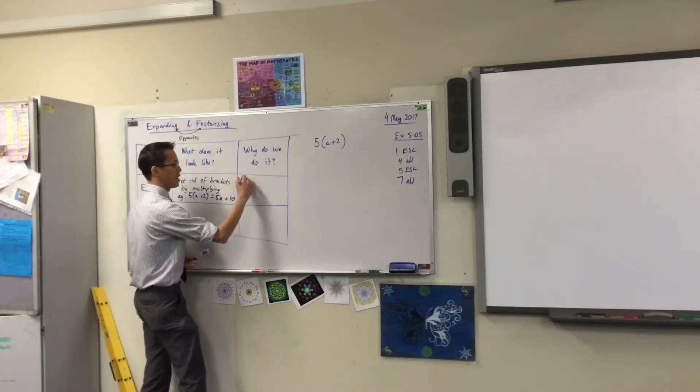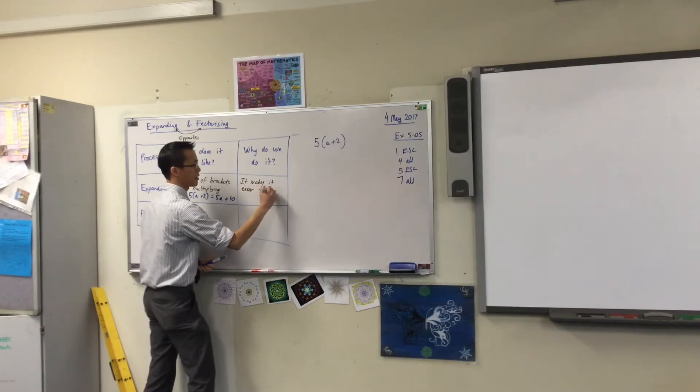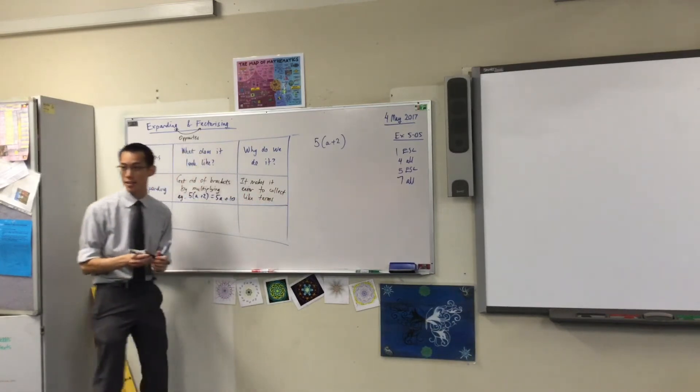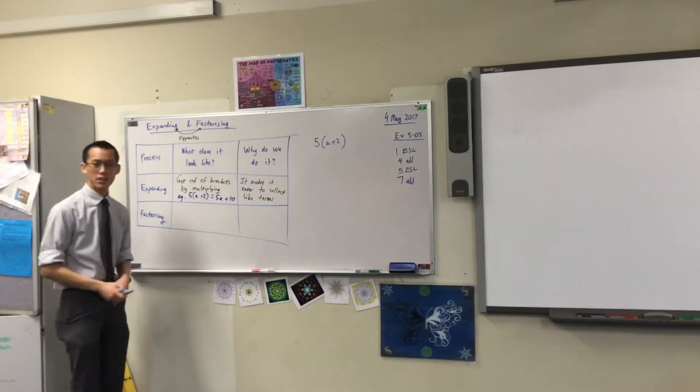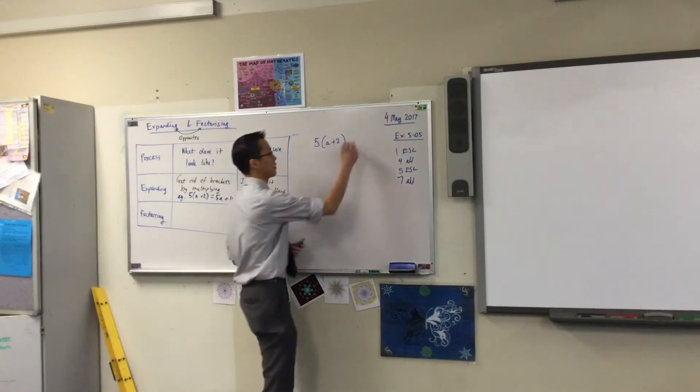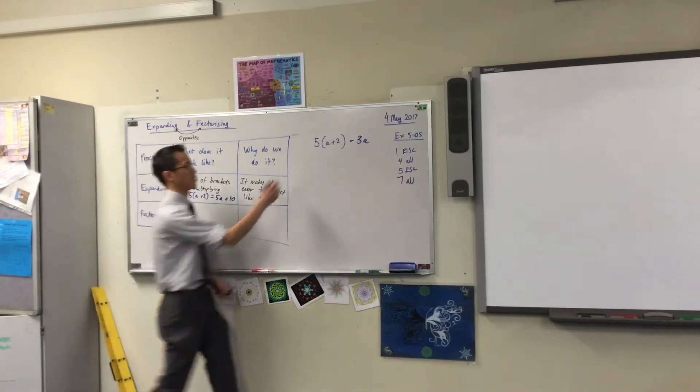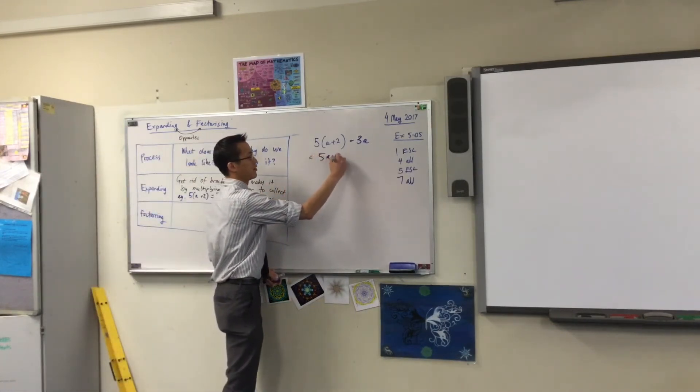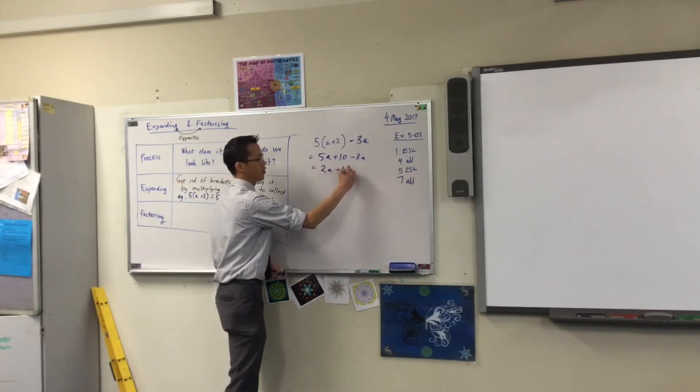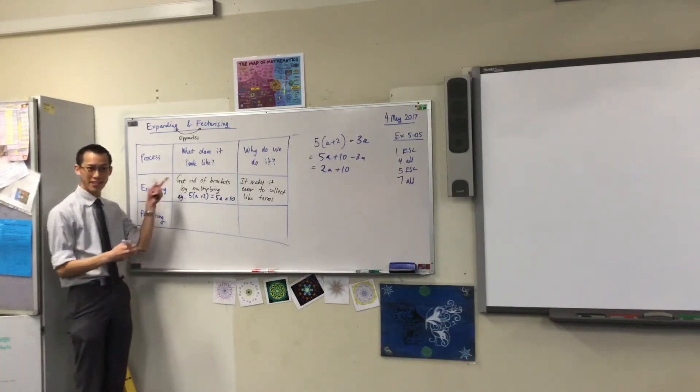So, why do we do it? It makes it easier to collect like terms. This is not the only thing it does, but for now, this is the thing we're primarily interested in. So, you don't have to write this down. But if the question was 5 times a plus 2 minus 3a, well, expanding gives you a clear advantage here, doesn't it? Because once you've done that, you can say, oh, I can put those like terms together, and I will get something, as Kate said, which is simpler than what I had before. So far, so good?